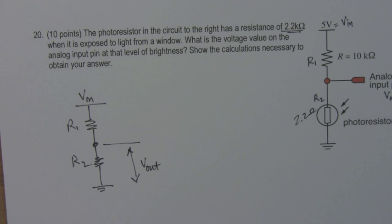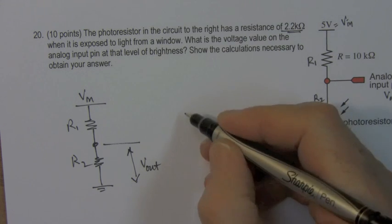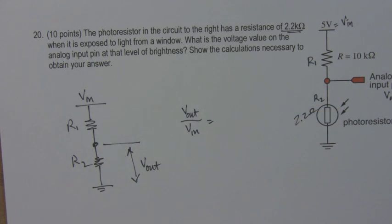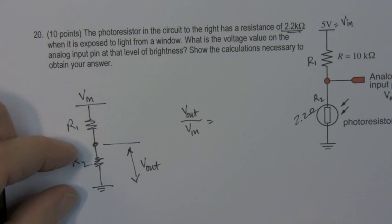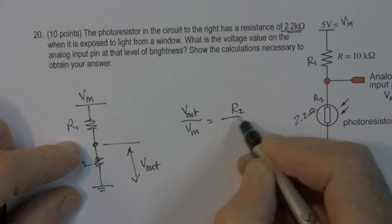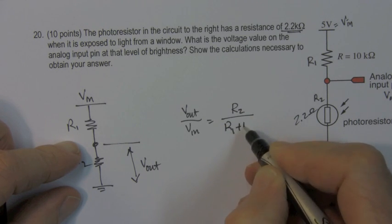And the formula, this is something you should just have memorized. VOUT over VIN. VOUT is the voltage across this lower resistance here. This formula for voltage divider is R2 over R1 plus R2.